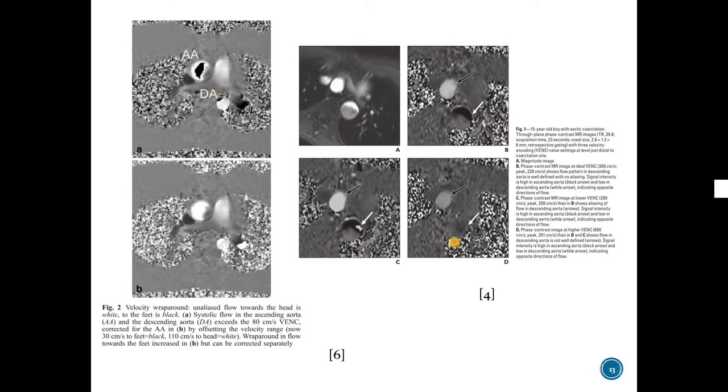And here in figure B, VENC was chosen as 300 cm per second. If it is chosen 200 cm per second, then we will have velocity aliasing. But if we choose it as 600 cm per second, then we will lose the information here, and it won't differentiate the blood vessel from the tissue.